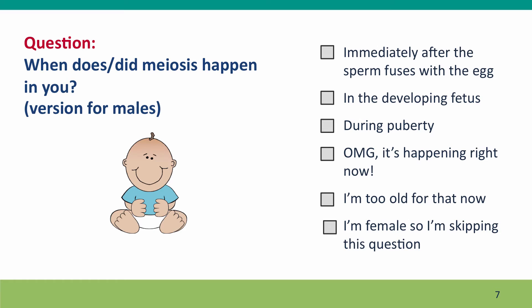Here's a pair of questions for you. This first question is for the males in the class, asking when does or did meiosis happen in you — check all boxes that apply. If you're female, you should skip this question.